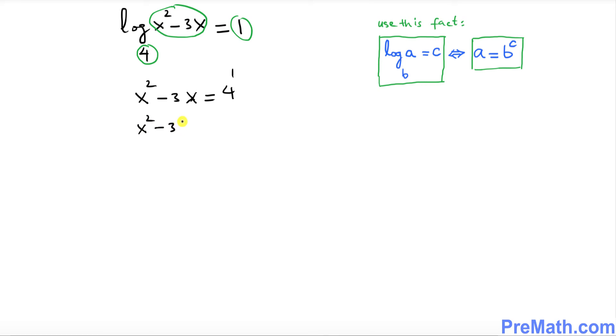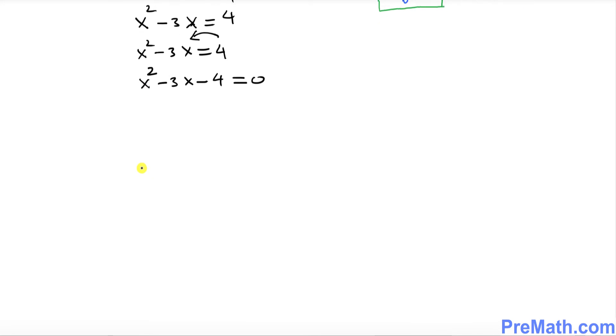So this could be written as x squared minus 3x equals to 4 to the power 1, so this is the same as writing x squared minus 3x equal to 4. I want you to move this 4 on the left hand side, so we will be having this quadratic equation.